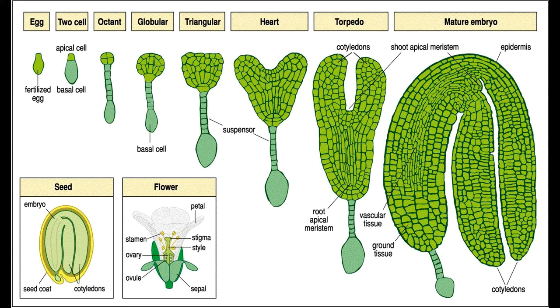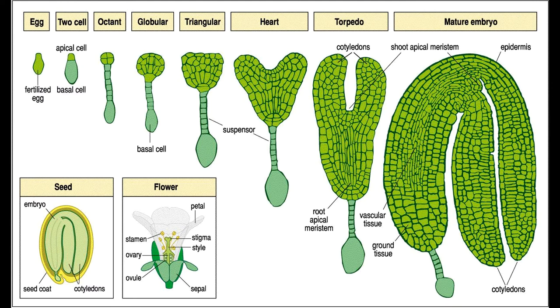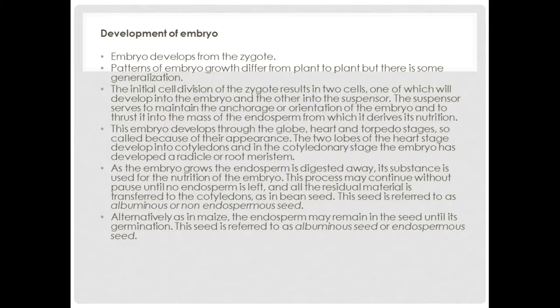This process may continue without a pause until no endosperm is left and all the residual material is transferred to cotyledons, as in bean seed. This seed is referred to as non-endospermous seed. Alternatively, as in maize, the endosperm may remain in the seed until germination. This seed is referred to as endospermous seed.